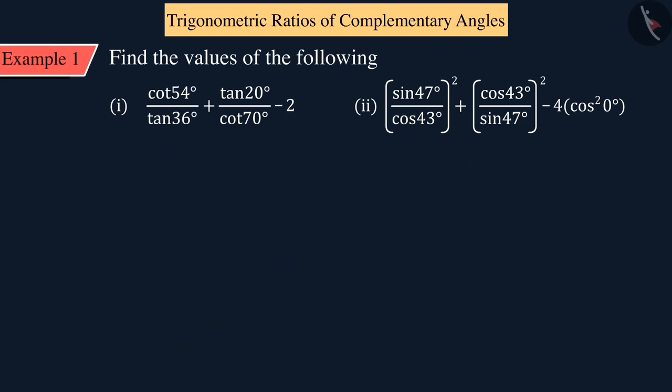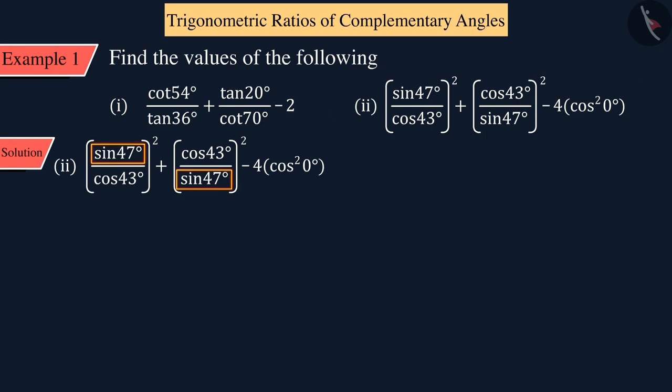Similarly, if we talk about the second part of the example, then this expression is in sin and cos, the first two terms of which are complementary angles. And we know that sin θ equals cos(90° - θ) and cos θ equals sin(90° - θ).